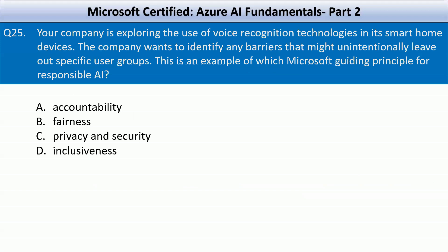Question number 25: Your company is exploring the use of voice recognition technologies in smart home devices and wants to identify barriers that might unintentionally leave out specific user groups. This is an example of which Microsoft guiding principle for responsible AI? Options are accountability, fairness, privacy and security, or inclusiveness. The company is identifying barriers that might exclude users such as those with speech impairments or non-standard accents, aligning with the inclusiveness principle, which ensures AI works fairly for everyone and is accessible to people of all abilities and backgrounds.